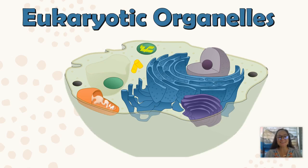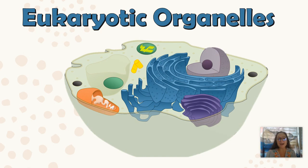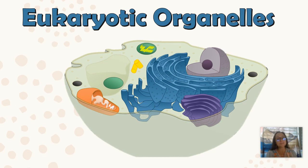In this video we're going to look at eukaryotic organelles. Eukaryotic cells are large complex cells that have membrane-bound organelles. You can think of organelles as little compartments or little organs with very specialized reactions that contribute to the overall functioning of the cell as well as the organism the cell is a part of.